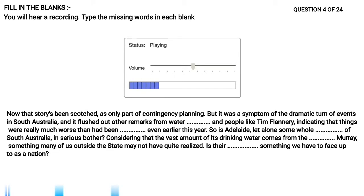Out other remarks from water academics and people like Tim Flannery, indicating that things are really much worse than had been foreshadowed even earlier this year. So is Adelaide, let alone some whole regions of South Australia, in serious bother? Considering that the vast amount of its drinking water comes from the beleaguered Murray, something many of us outside the state may not have quite realized. Is there a predicament something we have to face up to as a nation?